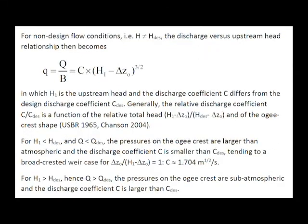For non-design flow conditions, a different expression may be derived and the discharge coefficient will differ from the design discharge coefficient. Generally, the relative discharge coefficient is a function of the relative total head and of the ogee shape. Therefore, for discharge smaller than design discharge, the pressure on the ogee crest is larger than atmospheric and the discharge coefficient is larger than design.